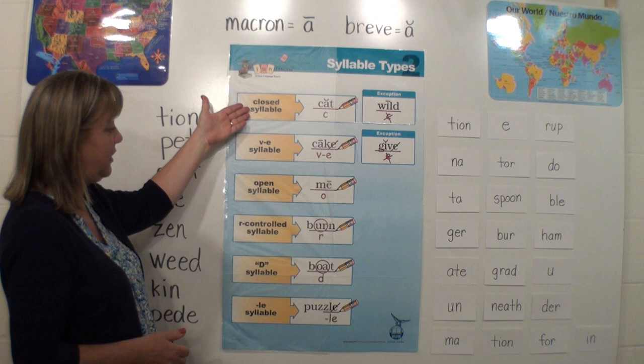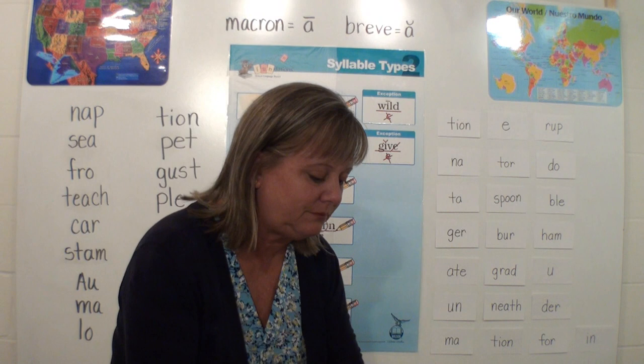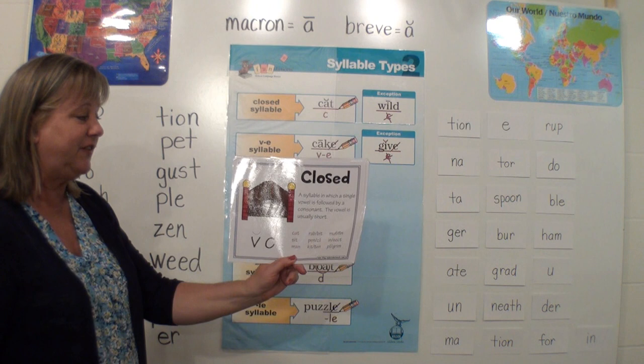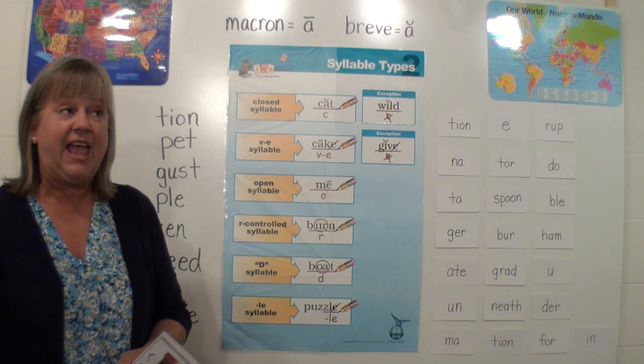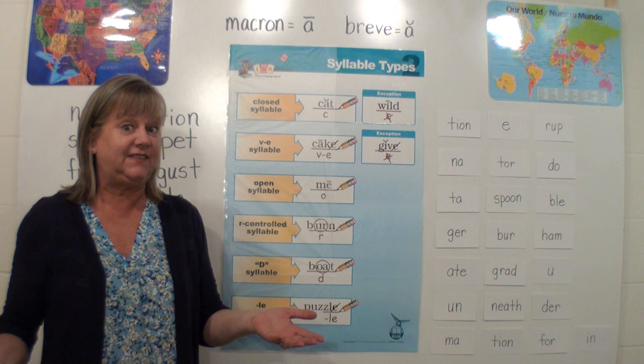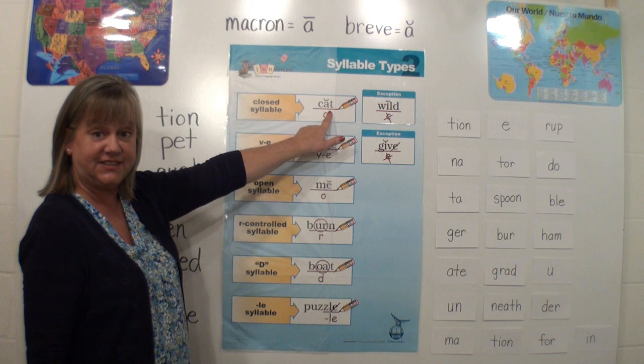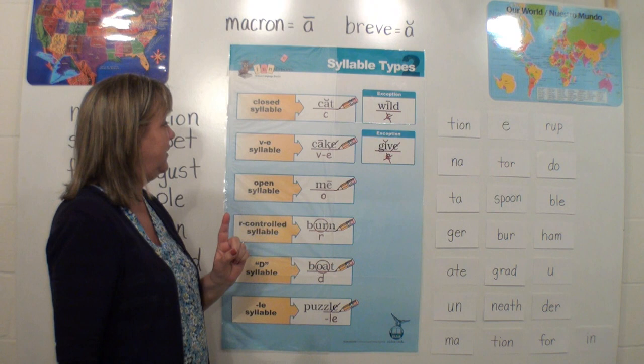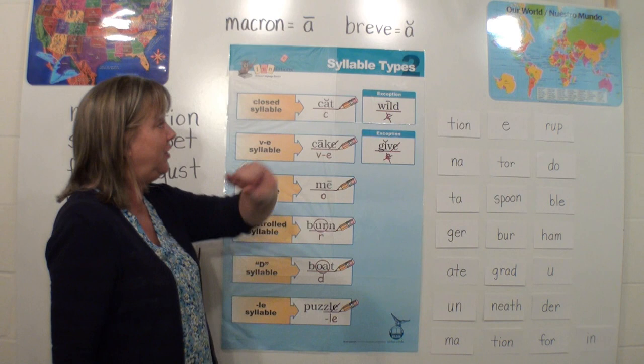The closed syllable. These would be your short vowel words. A syllable in which a single vowel is followed by a consonant — the vowel is usually short. This is the type of word that we start to learn in kindergarten: the CVC word. So the example they give here is "cat."